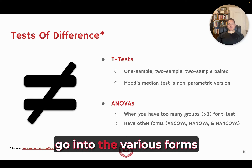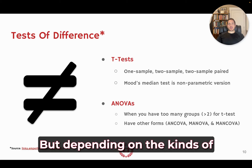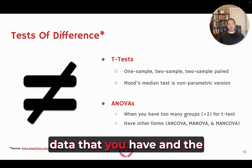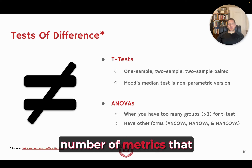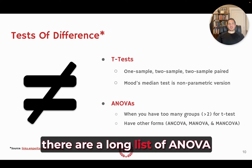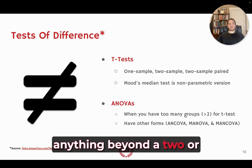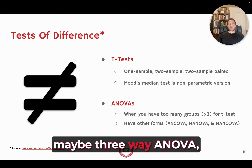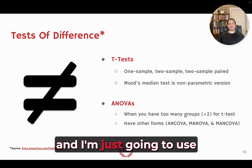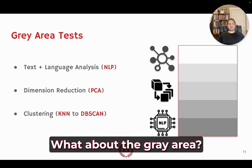I will not go into the various forms of ANOVA analysis — just the traditional ANOVA — but depending on the kinds of data and number of metrics, there are many ANOVA-type analyses available. For me, anything beyond a two- or maybe three-way ANOVA, and I'm just going to use regression analysis. What about the gray area?